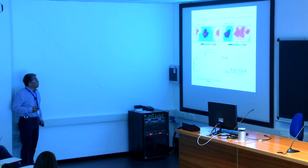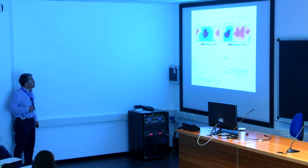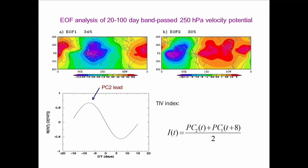We performed EOF analysis to capture this wave. For velocity potential, EOF1 shows a monopole structure and EOF2 shows a dipole structure. PC2 leads PC1 by about seven to eight days, meaning one pattern will appear seven to eight days after the other, representing eastward propagation. We designed a simple index combining PC2 and PC1 eight days later as a combined consideration of these two indices.